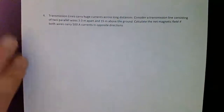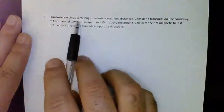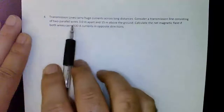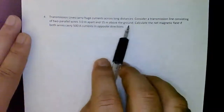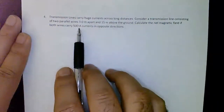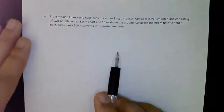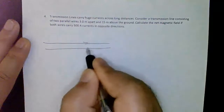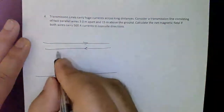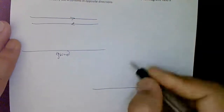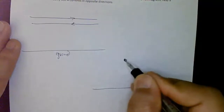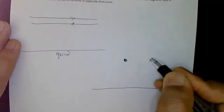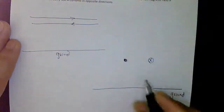Here's the next problem: transmission lines carry huge currents. Two parallel wires are 3 meters apart and 15 meters above the ground, each carrying 500 amps in opposite directions. Calculate the net magnetic field on the ground midway between the wires. The wires carry current out of the page and into the page respectively, and you're finding the magnetic field at a point on the ground directly below the midpoint.